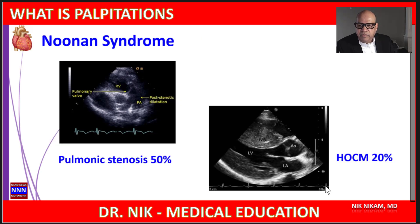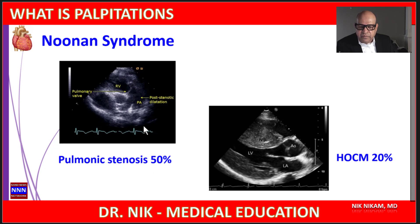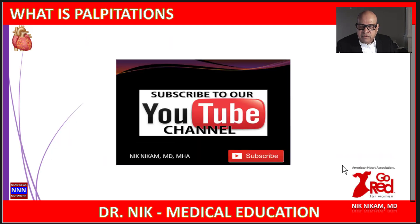This is an example of Noonan syndrome, which is characterized by pulmonic stenosis seen in approximately 50 percent of patients, along with hypertrophic cardiomyopathy seen in 20 percent of patients with Noonan syndrome.